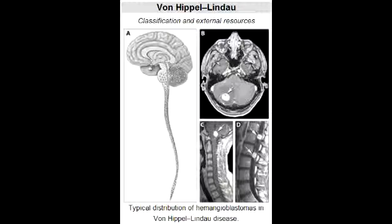What is pheochromocytoma? Pheochromocytoma is a rare tumor of the adrenal gland tissue. It results in the release of too much epinephrine and norepinephrine, which are hormones that control heart rate, metabolism, and blood pressure.